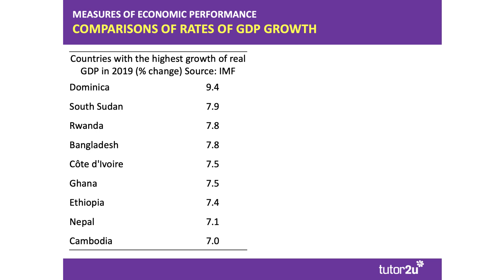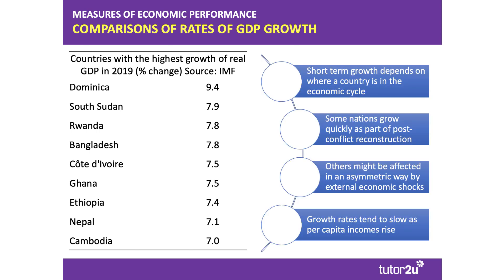A key point to bear in mind is that short-term growth data for any given year — such as 2019 — depends on where a country is in the economic cycle. At any one moment, some countries will be in a slowdown, perhaps one or two in recession, while other countries will be on the upswing phase of the cycle. Any one-year figure is merely a snapshot of cyclical growth.